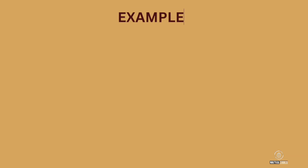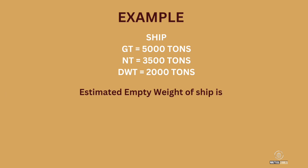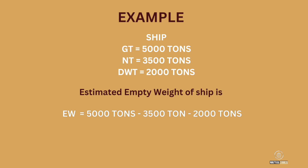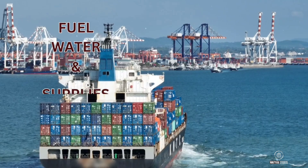For example, let's say we have a ship with a gross tonnage of 5,000 tons, a net tonnage of 3,500 tons, and a deadweight of 2,000 tons. Using our formula: empty weight equals 5,000 minus 3,500 minus 2,000, and we find the estimated empty weight of the ship is 500 tons.